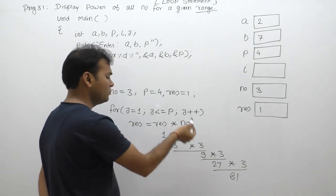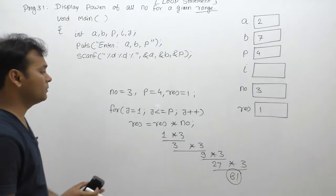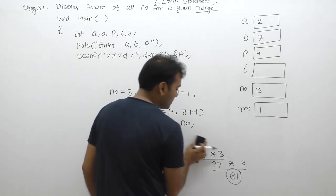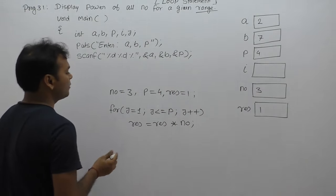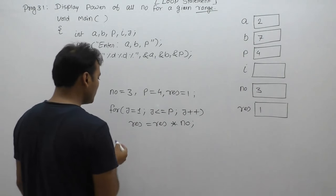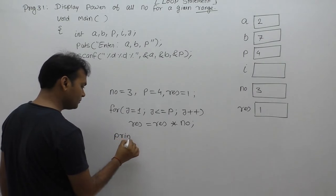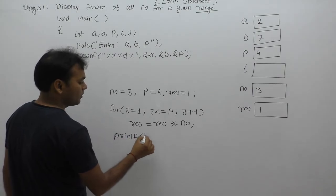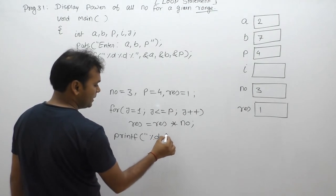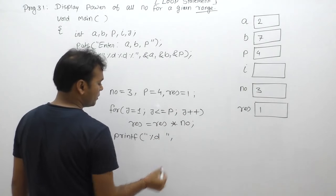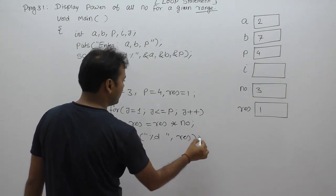After the loop completes — condition is false — the value of result holds 81, which is the power of the given number. We then print this result using printf with format specifier %d and the value of result.